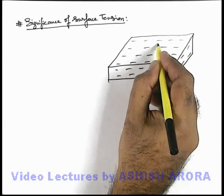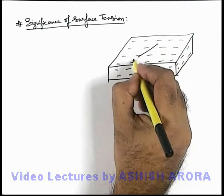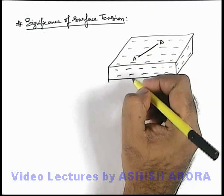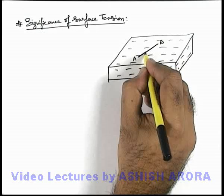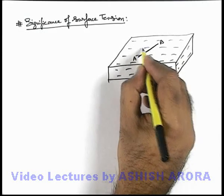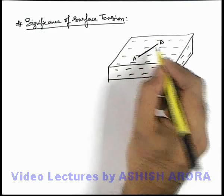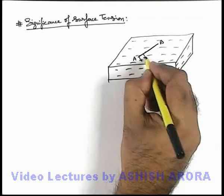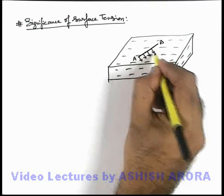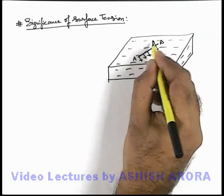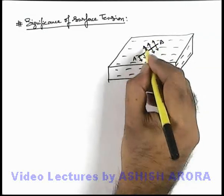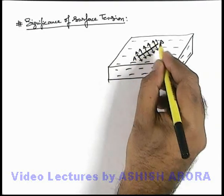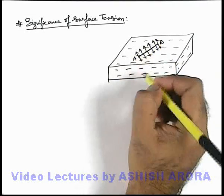Now in this situation, if we consider a hypothetical line — say this line A-B on the liquid surface — then every particle on this line will be experiencing forces on the left and right side of this line. So the resulting effect of all these forces will be acting in a direction normal to the line. The total force due to surface tension acting on line A-B will be zero, as it is being pulled by equal forces in opposite directions.